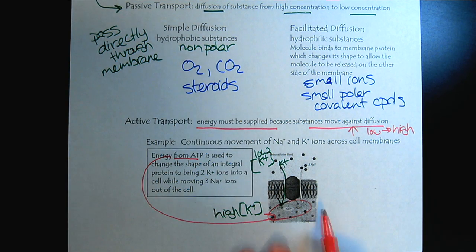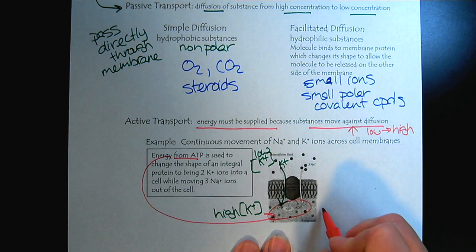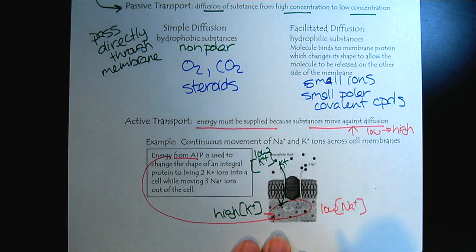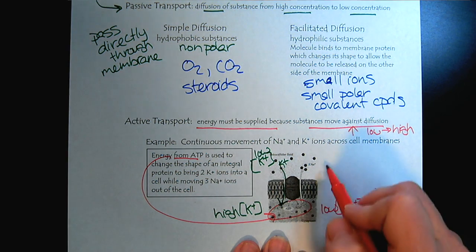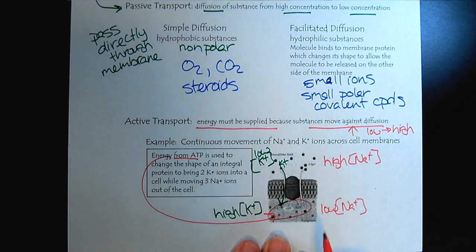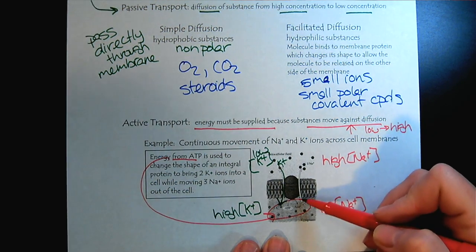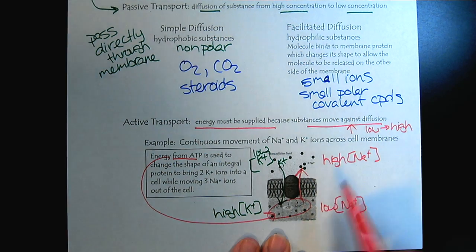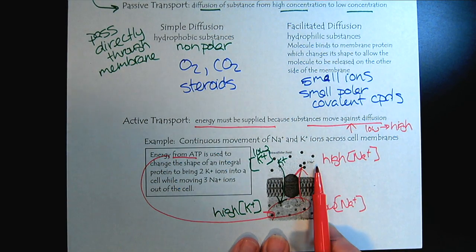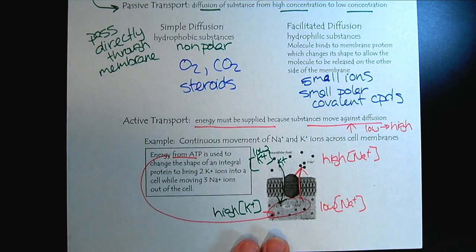Likewise, if we look inside the cell, we see that there is a low sodium ion concentration. And outside the cell we have a high sodium ion concentration. So we can simultaneously get the sodium ions out of the cell, going against this concentration gradient, while the potassium comes in.